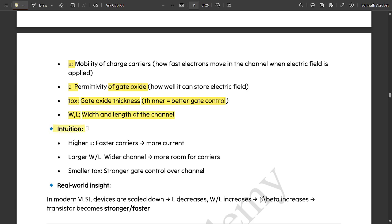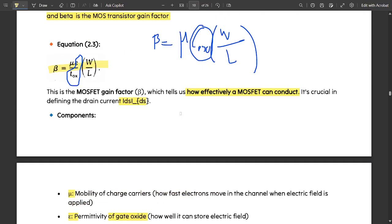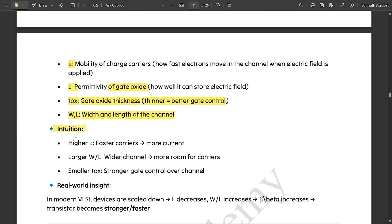The intuition: higher the mobility, faster are the carriers and the current would be in the higher amount. Larger the value of W by L, the wider is the channel. Wider channel means the width would be definitely more, so that is why the larger value of W by L and more room for carriers.